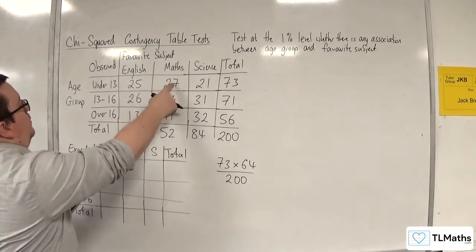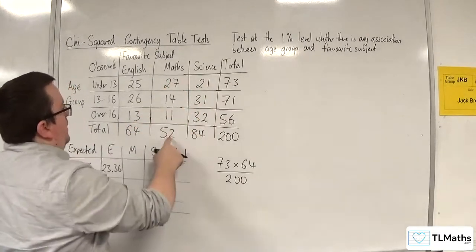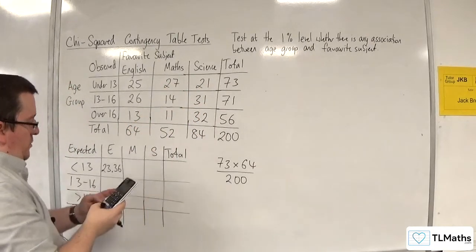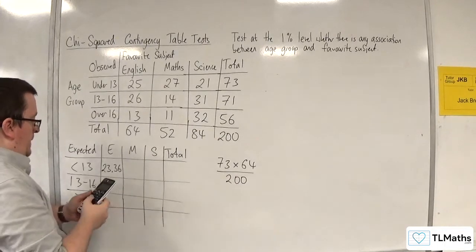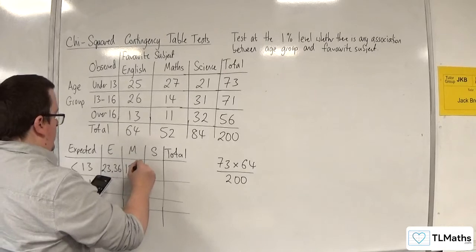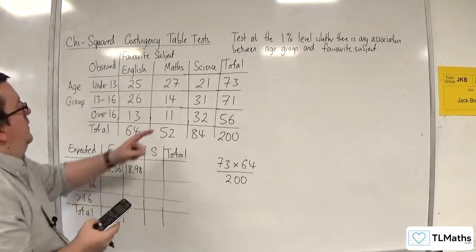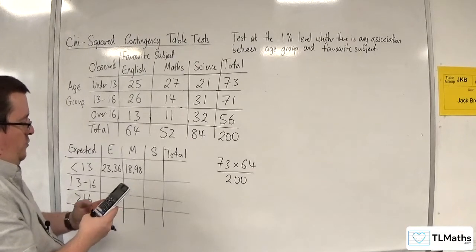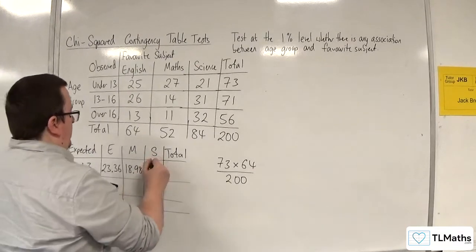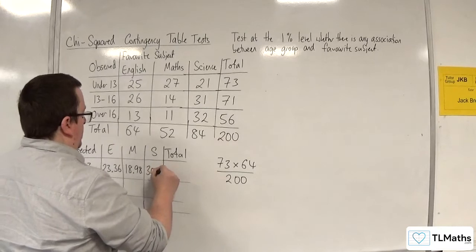Right, so here we've got 73 times 52 divided by 200, which is 18.98. Right, so for this value here, we've got 73 times 84 divided by 200, which is 30.66.